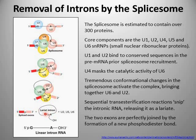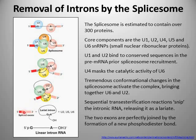That transesterification reaction snips the RNA at this point, making a break between these two nucleotides. When that break occurs, a free OH group can perform a similar nucleophilic attack, leading to a similar transesterification reaction at the other end of the intron, causing that phosphodiester bond to break as well. Once you've broken both of those bonds, a new phosphodiester bond forms between the two exons — which are now brought into close proximity by the splicing machinery — and the intronic material is released as a structure called a lariat.